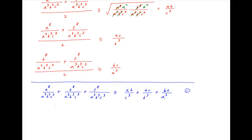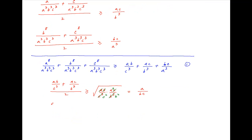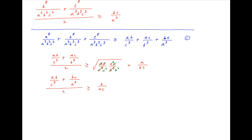Now, similarly, applying the AM-GM inequality on the two numbers ab/c³ and ac/b³: their arithmetic mean, which is the sum divided by 2, is greater than or equal to the square root of their product. The right-hand side simplifies to the square root of a² upon b²c², which equals a upon bc. Similarly, ab/c³ plus bc/a³ divided by 2 is greater than or equal to b upon ac. And finally, ac/b³ plus bc/a³ divided by 2 is greater than or equal to c upon ab.